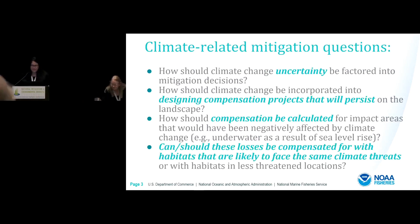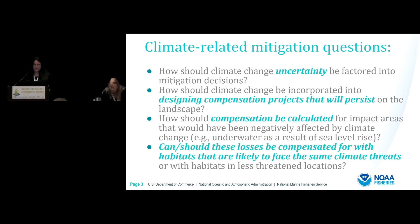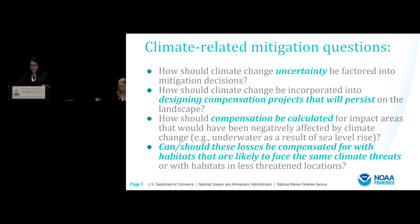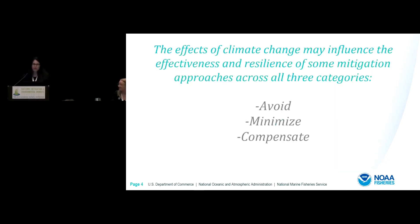As NOAA was developing its mitigation policy and procedures, a number of climate-related questions were asked: there's a lot of uncertainty associated with climate change — how do we factor it into mitigation decisions? How do we design mitigation projects that are durable and resilient? And how do we think about compensation for adverse impacts to sites that will be negatively affected by climate change, such as projected sea level rise and land erosion? Keep in mind that climate change can be integrated not just into compensation, but throughout the entire mitigation sequence including avoidance and minimization.